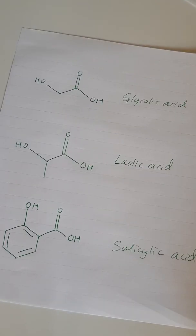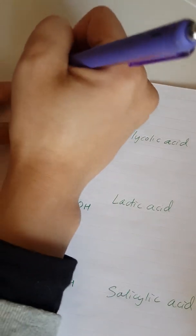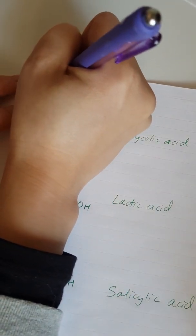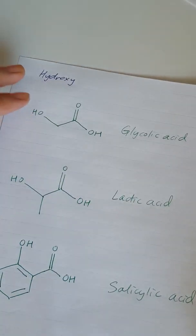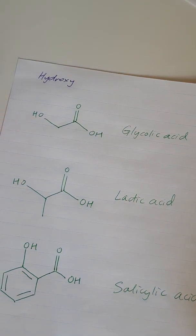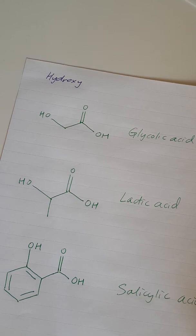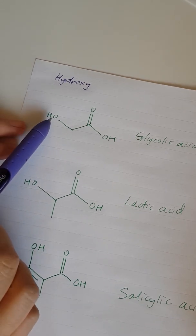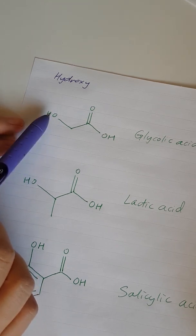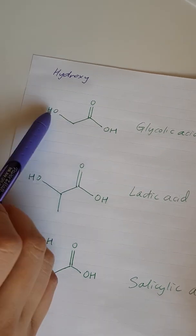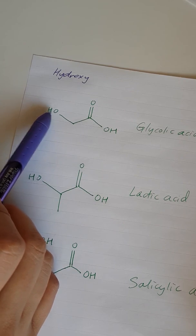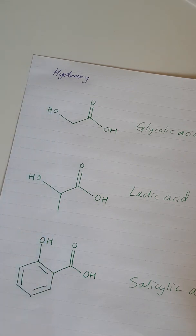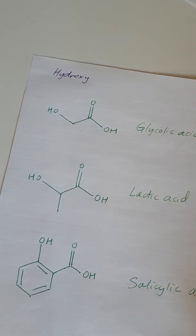So firstly let's talk about hydroxy and acids. Hydroxy means something with an OH group. In chemistry OH and HO are actually the same thing — all it means is a hydrogen bonded to an oxygen. The way that you write it is so that the oxygen is bonded to two things and the hydrogen is on the end. If your oxygen is on the left hand side then you put the hydrogen on the left, if it's on the right hand side then you put the hydrogen on the right.